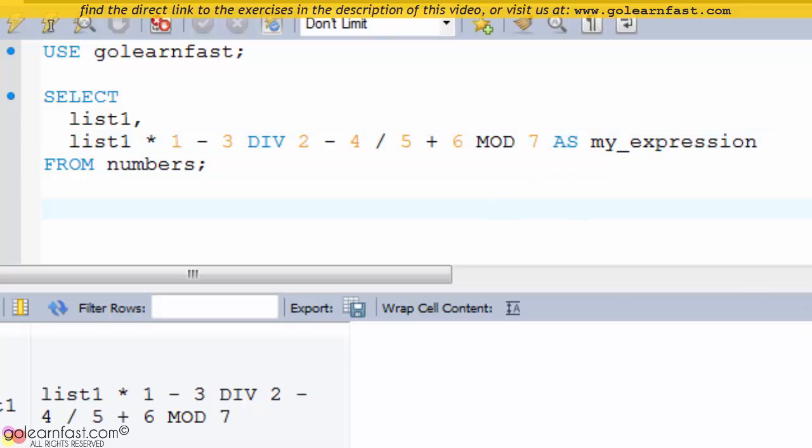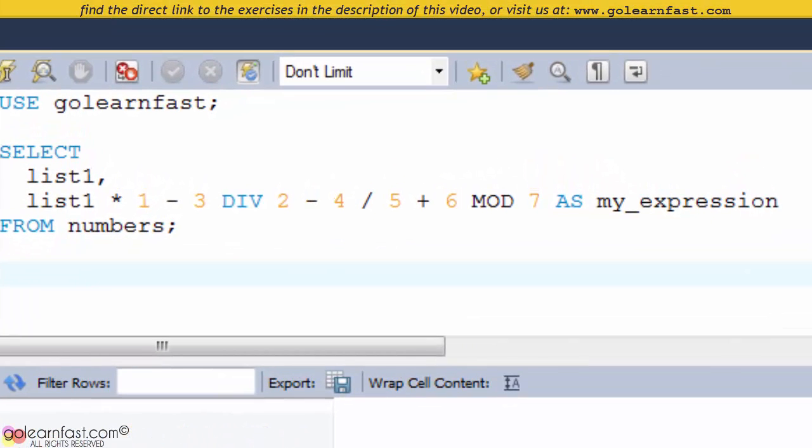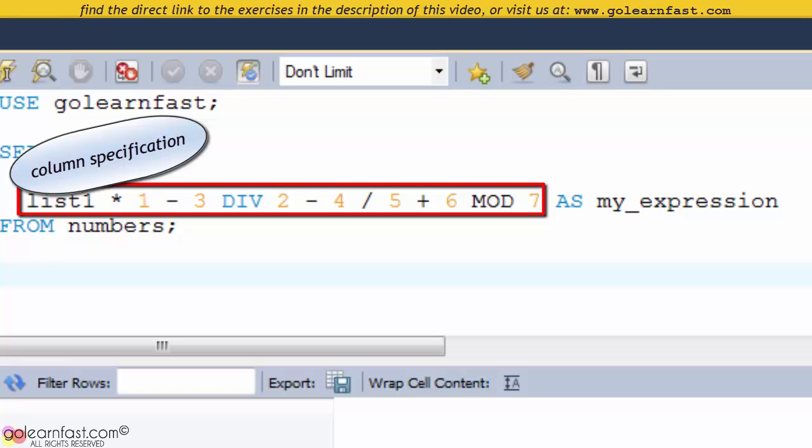This SELECT statement assigns a column alias for the last column which uses an expression. To assign a column alias, you code the column specification followed by the AS keyword and the new name as shown by this example.